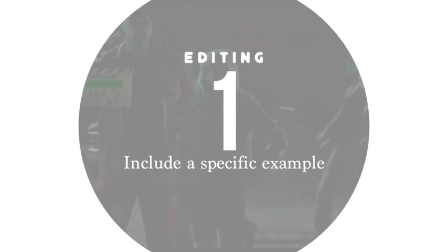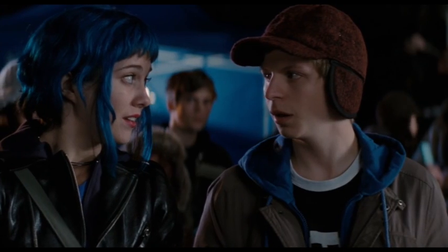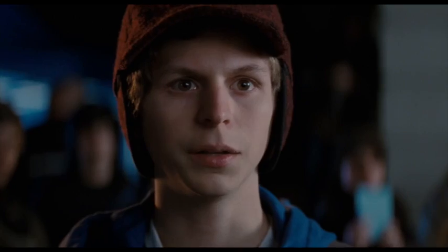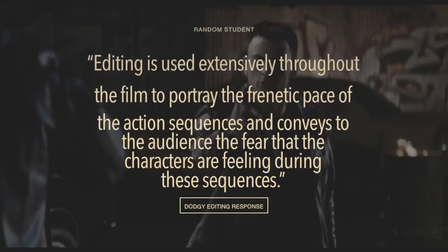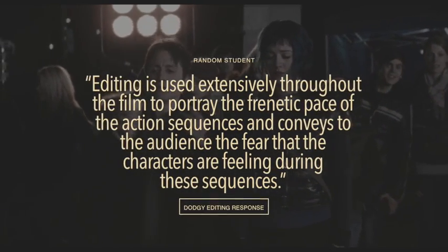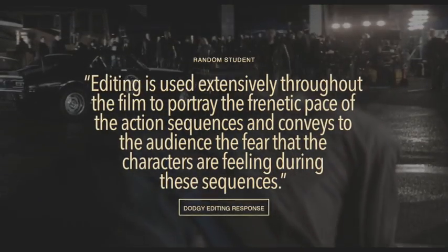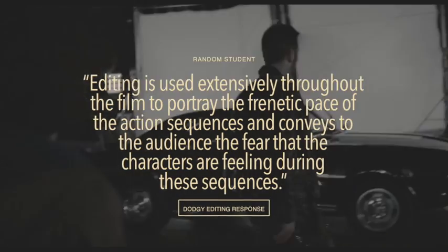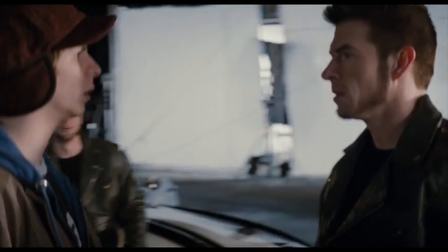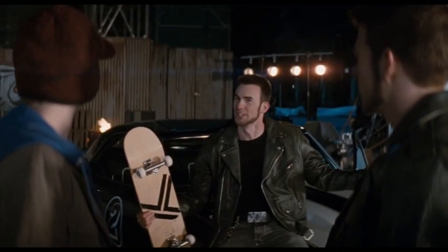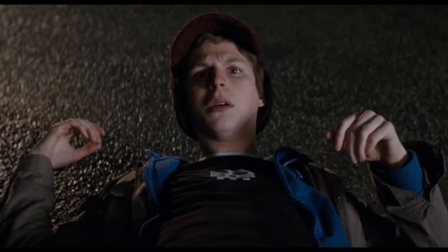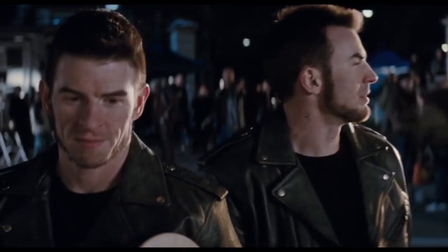Number one: include a specific example. It's very easy to be general and talk vaguely about the existence of editing in the films you've studied. Students can say things like, 'Editing is used extensively throughout the film to portray the frenetic pace of the action sequences and conveys to the audience the fear that the characters are feeling during these sequences.' It sounds like a nice sentence, but it's not really saying anything — it's very vague and reads like you can't really remember the film.